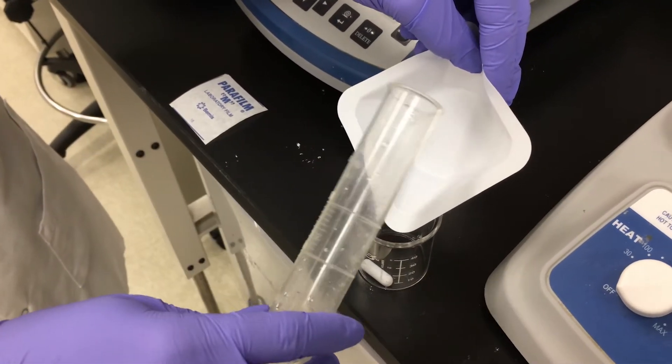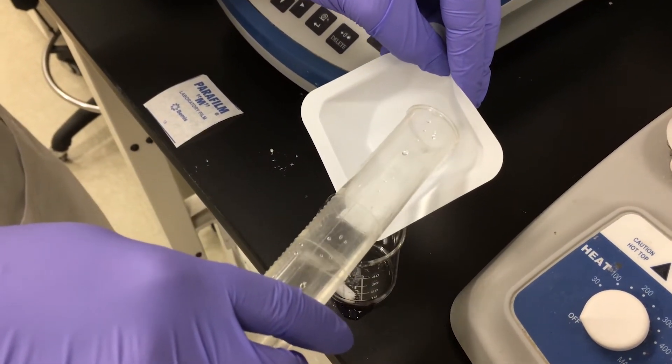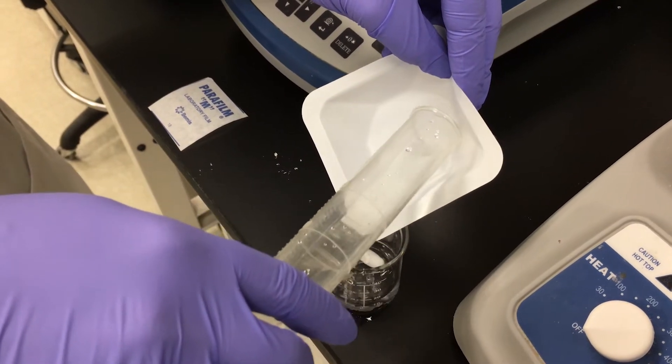Carefully add the measured sodium borohydride to a beaker with a magnetic stirrer, using cold water to rinse it fully into the beaker.